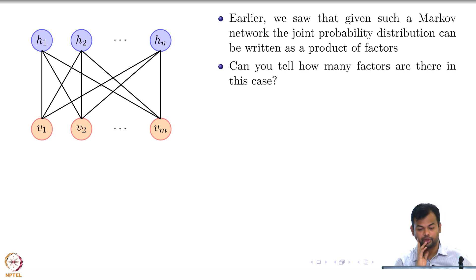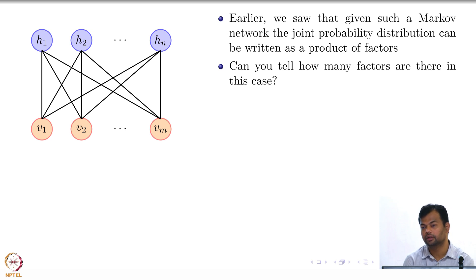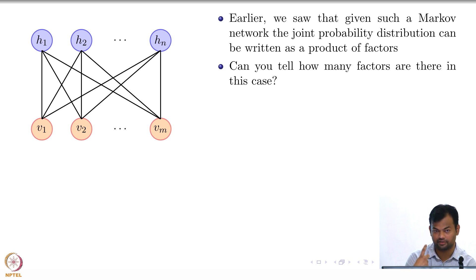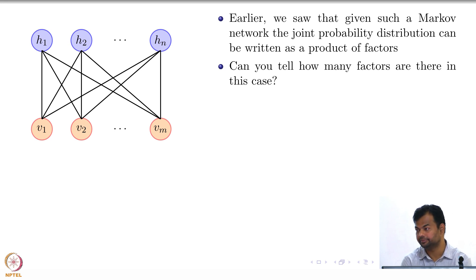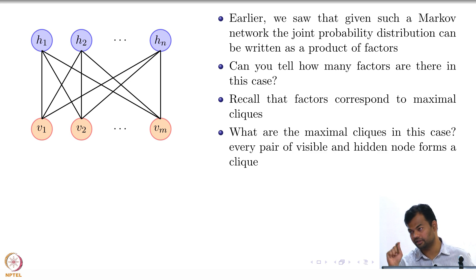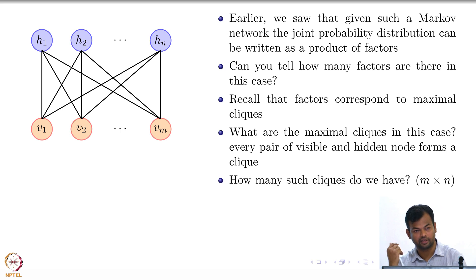What are the factors in this particular Markov network? We have factors corresponding to maximal cliques. What are the maximal cliques here? Just edges — just two nodes form a maximal clique. So how many factors will you have? m cross n. The maximal cliques in this case are every pair of hidden-visible variables, so you will have m×n factors. This is how you can write it.